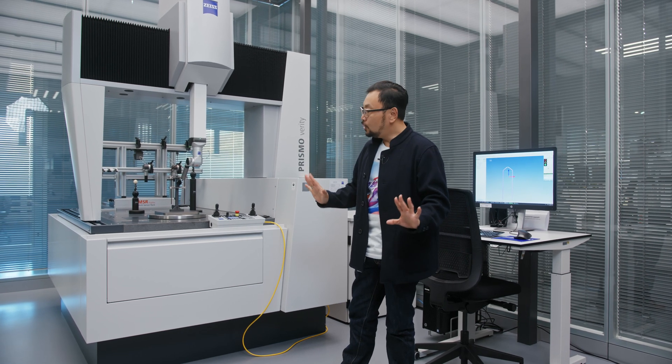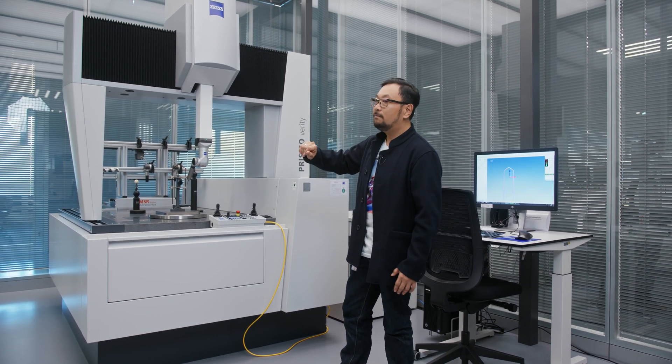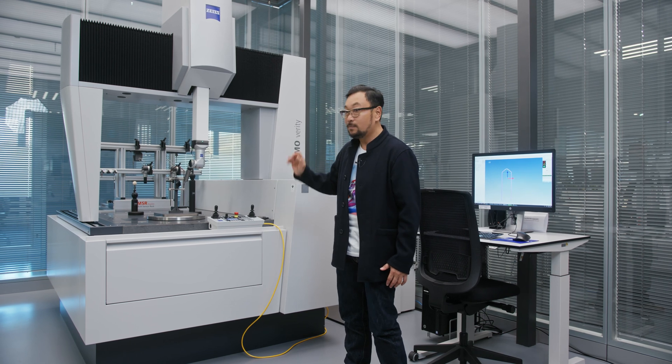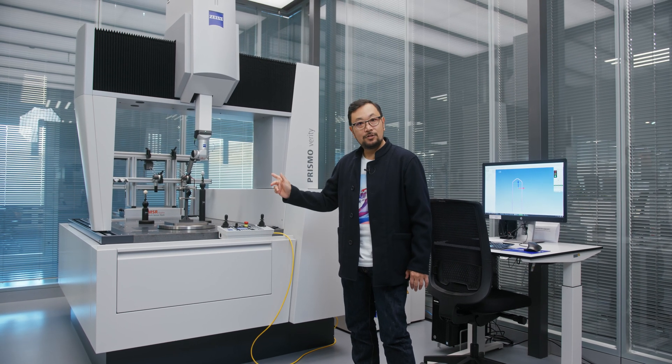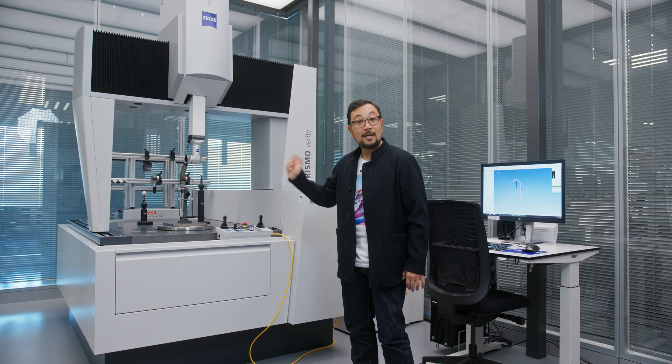Earlier we spoke about some of the new components in the new electric vehicles. One of those components is the motor. What we're looking at here is an application of measuring the hairpin. First, the machine we've chosen to measure the hairpin is a Prismo Verity. This allows us the opportunity to use a dot scan.